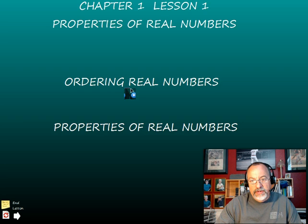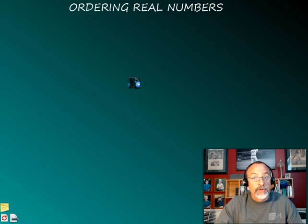So let's look at real numbers and how do we order them. The nice thing about having numbers is that we can put them in order, and having things in order is always a nice thing.